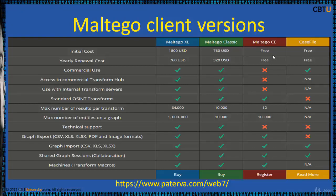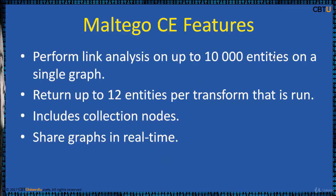Maltego CE is the Community Edition. It is available for free for everyone after a quick registration. It offers the same functionality as Maltego Classic with a few limitations. Maltego CE is used by security professionals worldwide and it ships with Kali Linux out of the box. It has the ability to perform link analysis on up to 10,000 entities in a single graph, and the capability to return up to 12 entities per transform that is run.